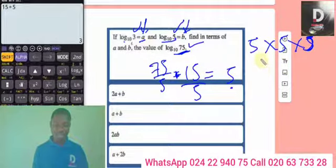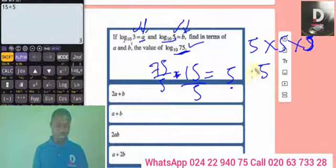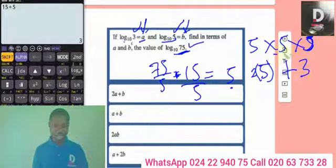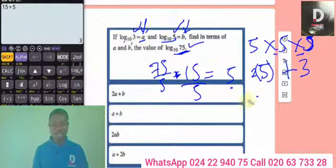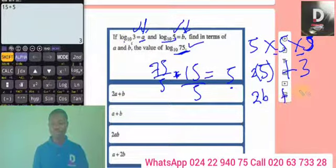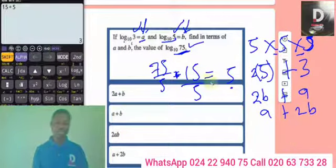Since it's multiplication, you add the logarithms. We have five twice, so that gives two log 5. Log 5 means b, so I get 2b. Plus log 3, which means a. So you rearrange and get a + 2b. That's the answer — he expected you to break the number into only 5s and 3s using multiplication or division.